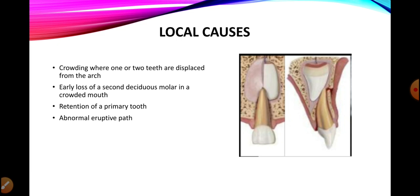The local causes of crossbite include crowding in the arch, where one or two teeth are deflected into a position that establishes the crossbite. For example, a crossbite of an upper lateral incisor is often due to lack of space between the upper central incisor and the deciduous canine, causing the upper lateral incisor to erupt more palatally and develop a crossbite. Crowding can also be caused by early loss of a second deciduous molar in a crowded mouth.